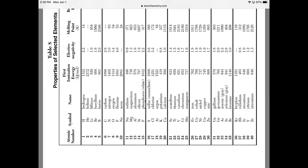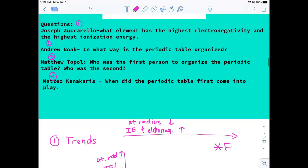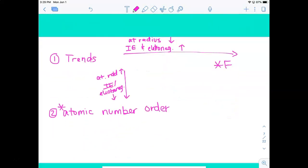So how do I get from 900 to 738? I go down. So you can look up any trend that you want to using table S if you prefer to do that. Okay, so Andrew's question: in what way is the periodic table organized? So the periodic table is in atomic number order.